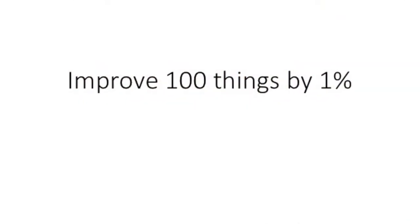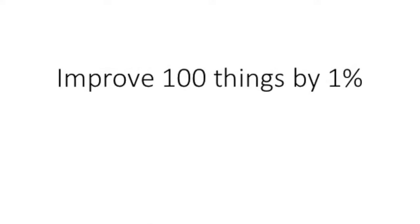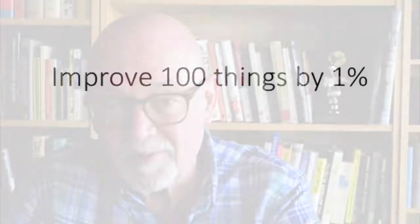I've often told my clients to try to improve 100 things by 1% instead of one thing by 100%. If you improve 100 things, pretty much everybody in the organization will probably notice something just got a little bit better. If you choose to change one thing by 100%, you're probably going to get a lot of resistance, and secondly, not everybody would see it.